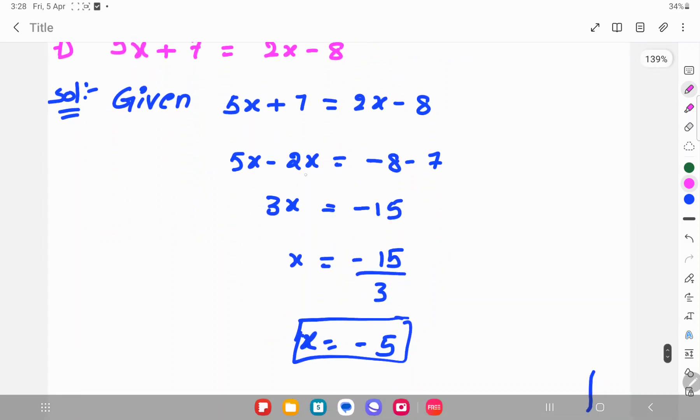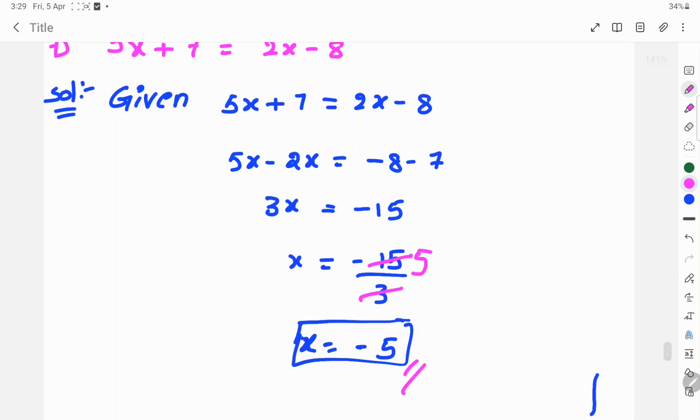So 5x minus 2x is 3x equals minus 8 minus 7 which is minus 15. So x equals minus 15 by 3. 3 cancels in 15 five times, so x equals minus 5. This is the solution.